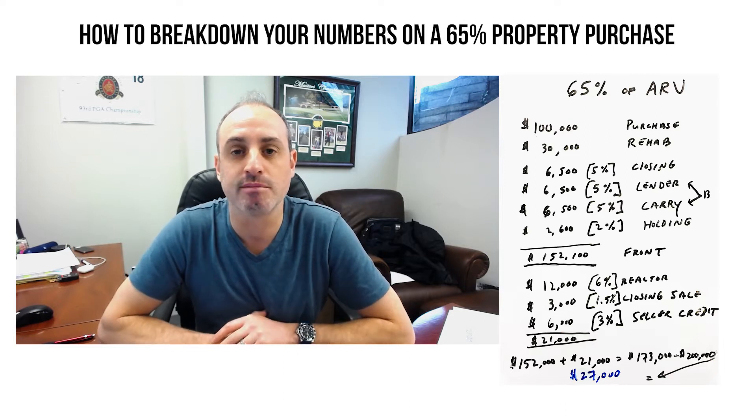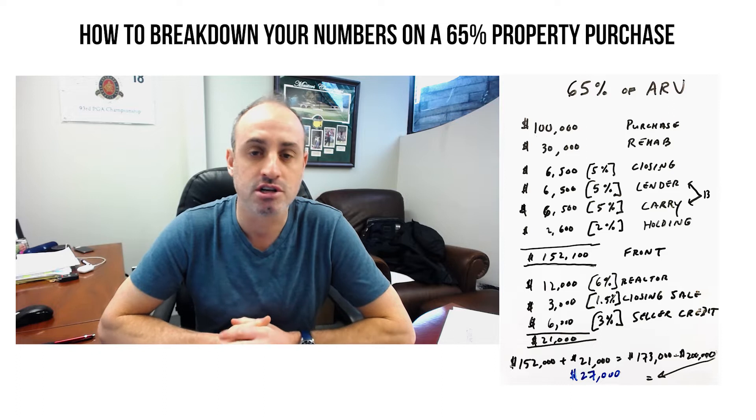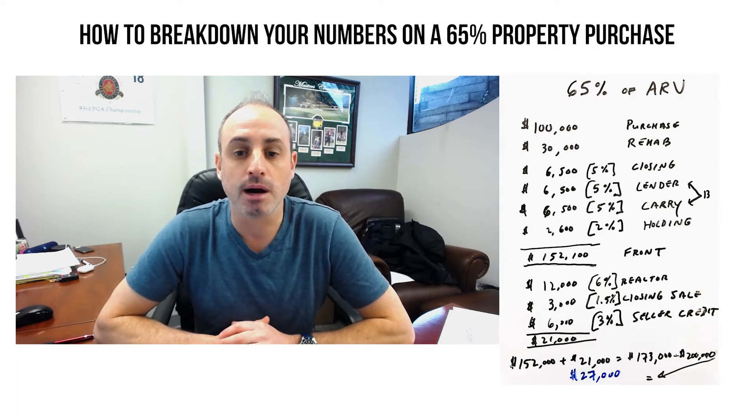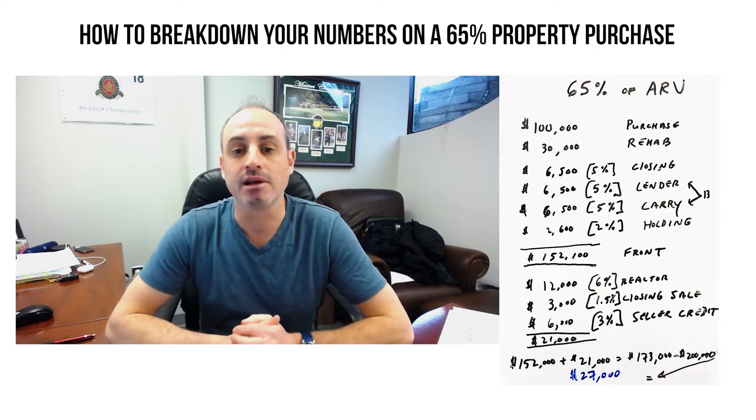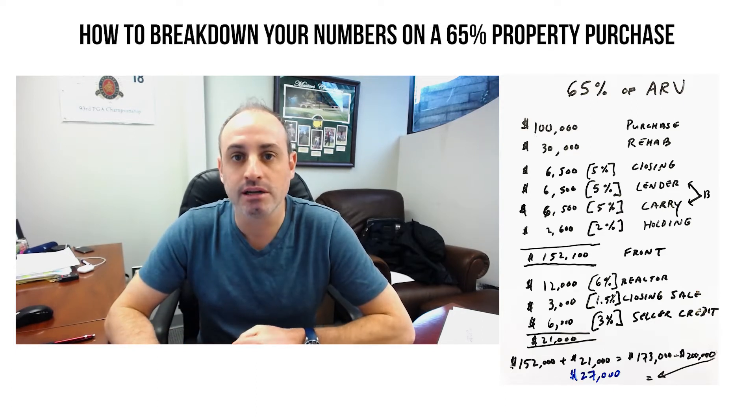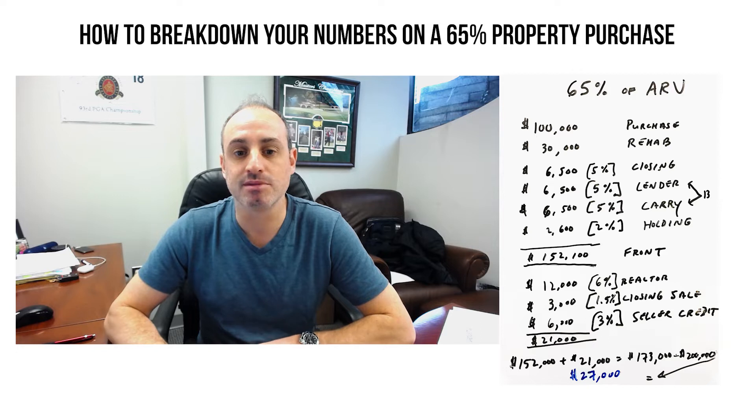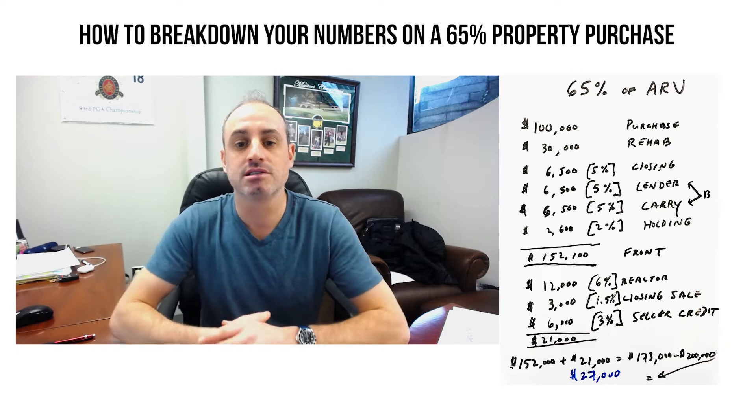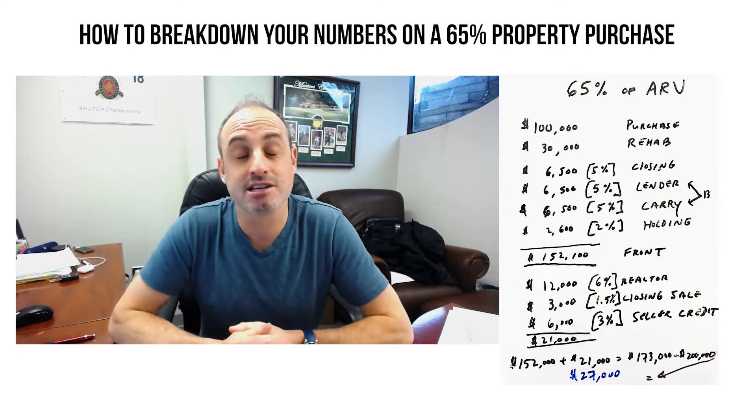Let's say you buy for $100,000, you put $30,000 into it. Here's some additional costs you're going to have on the front end. We have front end costs and back end costs. On the front end costs, you're going to have closing, potentially lender points if you're using a lender, carrying costs and then holding costs.